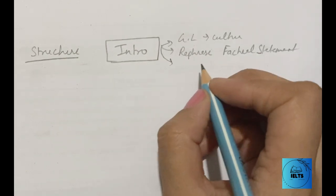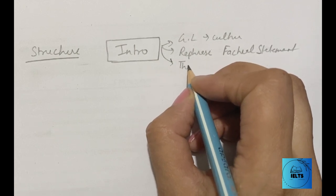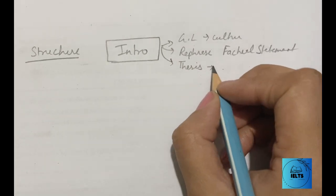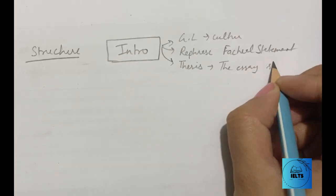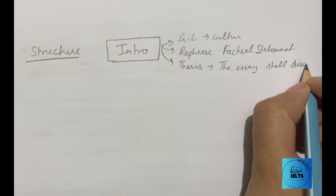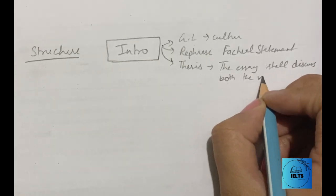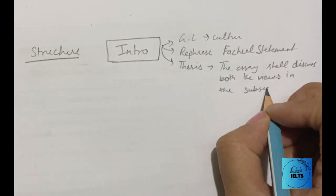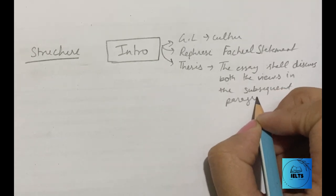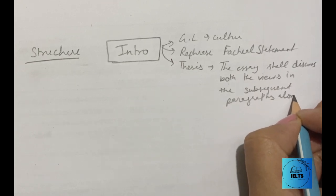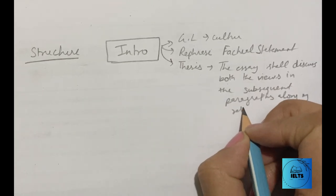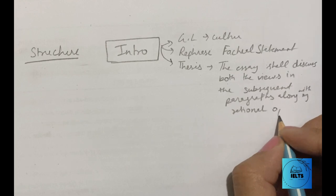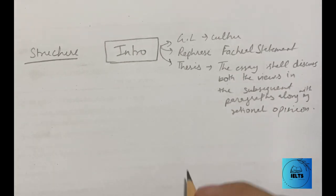Uske baad likhni hai thesis line. Thesis line ka matlab hai ki maine subjective statement ka jawab diya. Unhone kaha tha 'discuss both views,' toh maine keh diya: 'The essay shall discuss both the views in the subsequent paragraphs along with my rational opinion.' Kyunki unhone mera opinion bhi poocha tha, toh likhna hai 'along with my rational opinion' — rational matlab thos, strong opinion. So introduction hogi, uske baad body paragraphs.